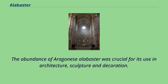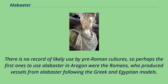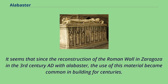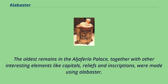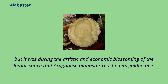The abundance of Aragonese alabaster was crucial for its use in architecture, sculpture, and decoration. There is no record of likely use by pre-Roman cultures, so perhaps the first ones to use alabaster in Aragon were the Romans, who produced vessels from alabaster following the Greek and Egyptian models. Since the reconstruction of the Roman wall in Saragossa in the 3rd century AD with alabaster, the use of this material became common in building for centuries. Muslim Saragossa was also called Medina al-Bayida, the White City, due to the appearance of its alabaster walls and palaces, which stood out among gardens, groves and orchards by the Ebro and Huerva rivers. The oldest remains in the Aljafería palace, together with other interesting elements like capitals, reliefs, and inscriptions, were made using alabaster.